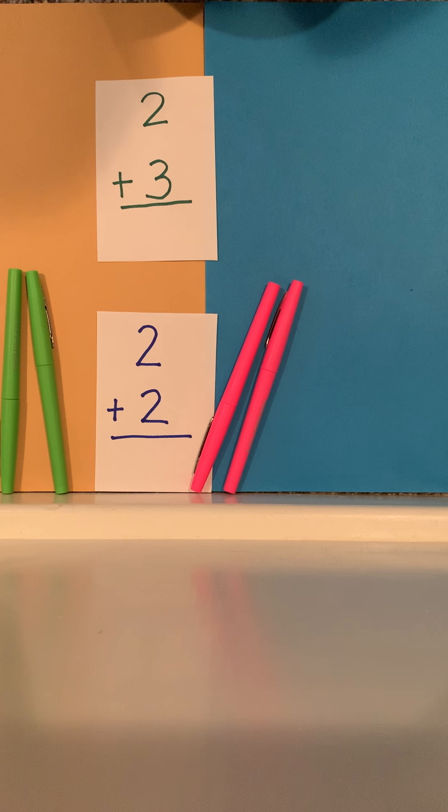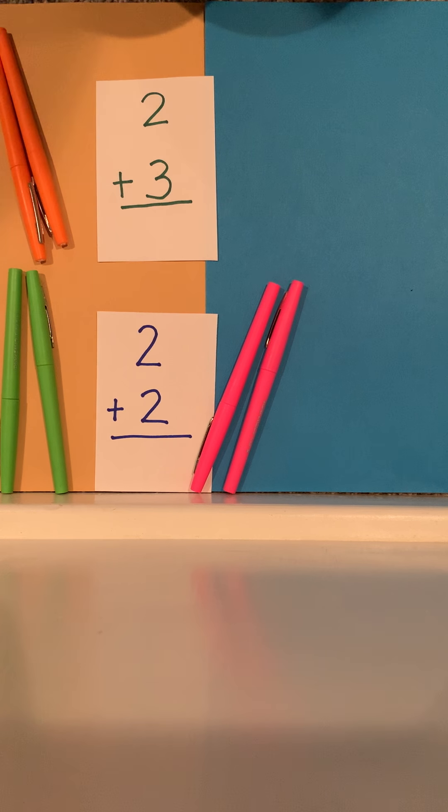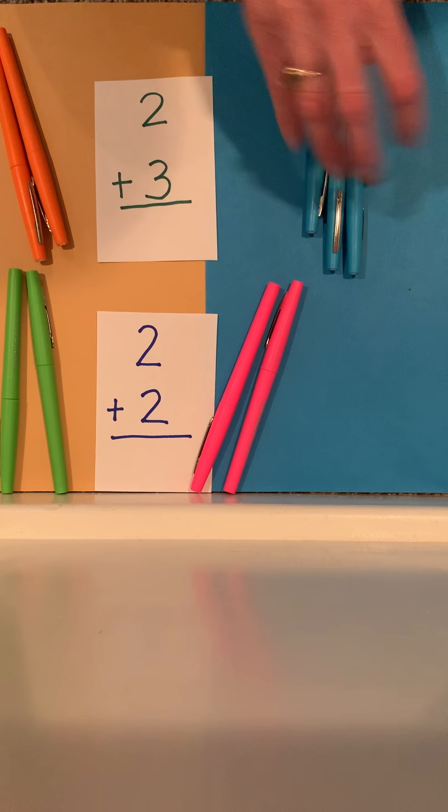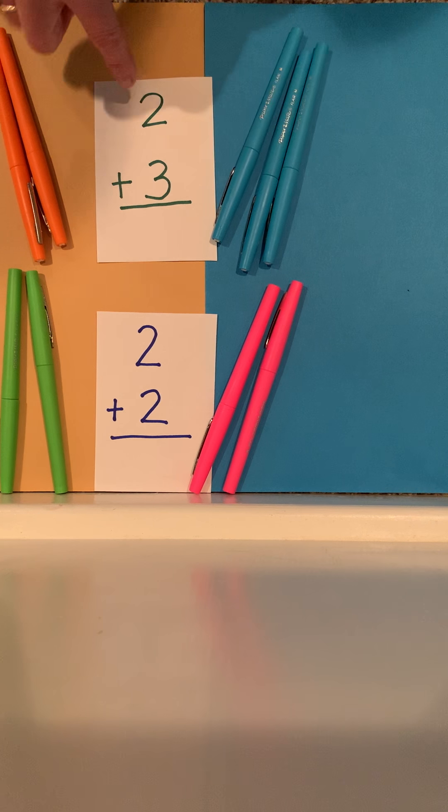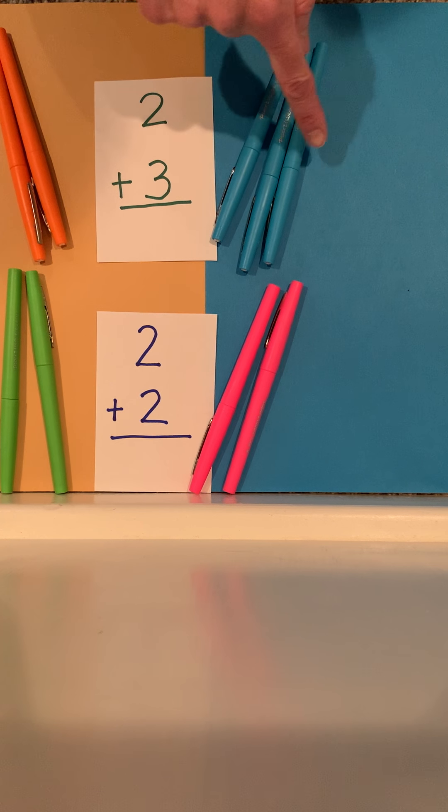It's the same way if we make that picture up here. If we have 2 markers plus 3 more markers, 2 plus 3 equals 5. 1, 2, 3, 4, 5.